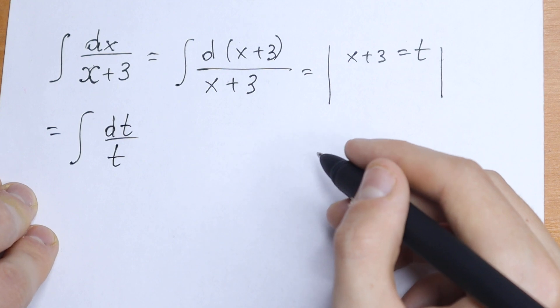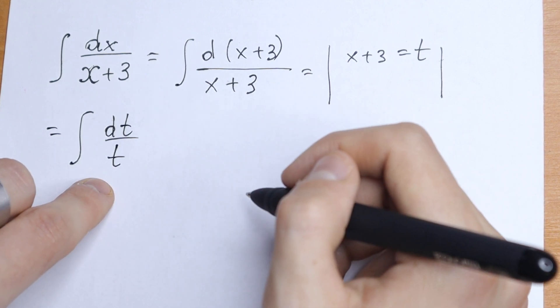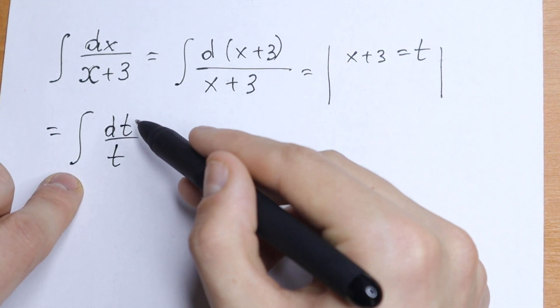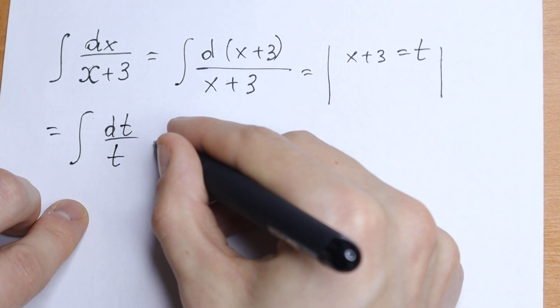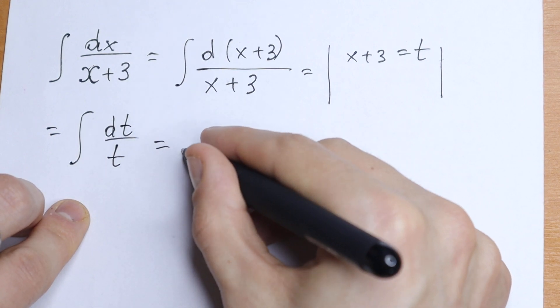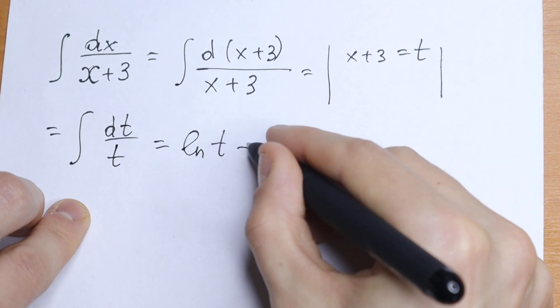This is a classic case, the natural log, because we have 1 over x but instead of x we have our t. So as a result, we'll have natural log t plus c.